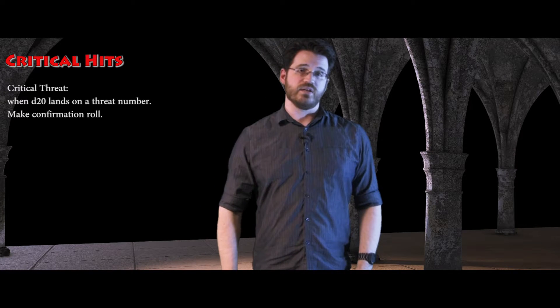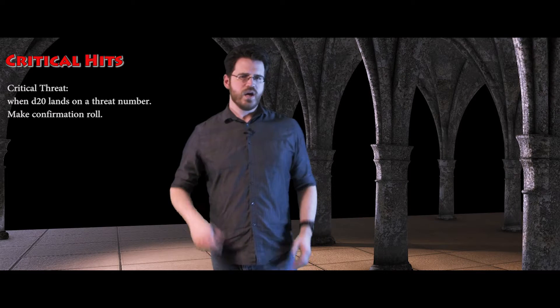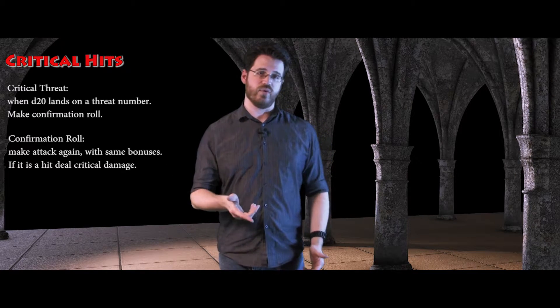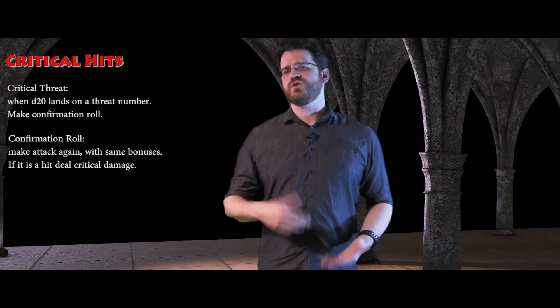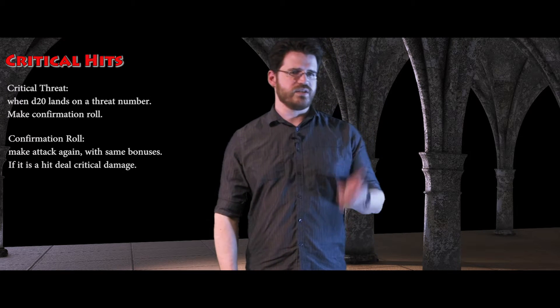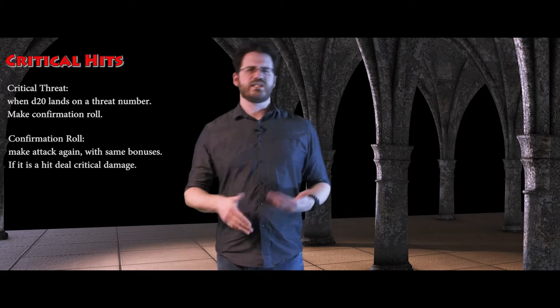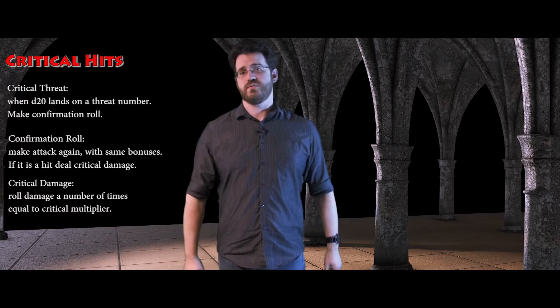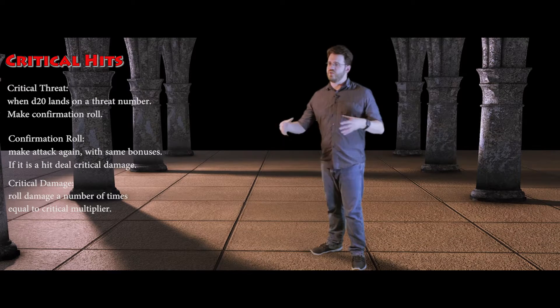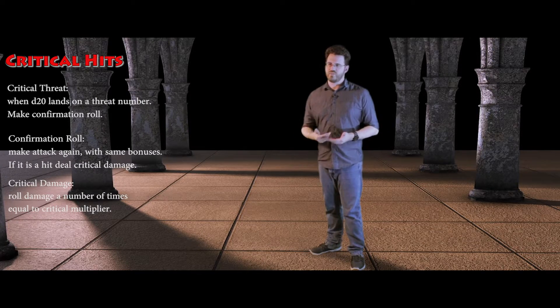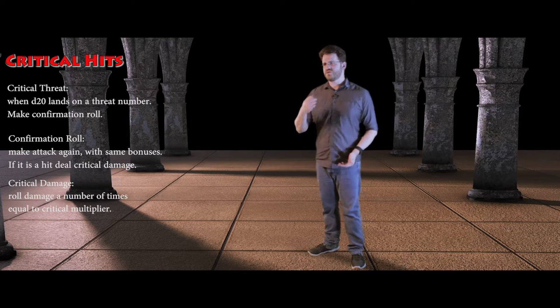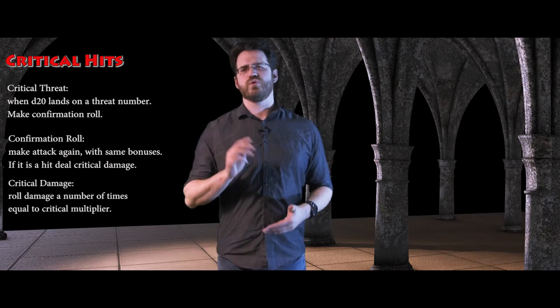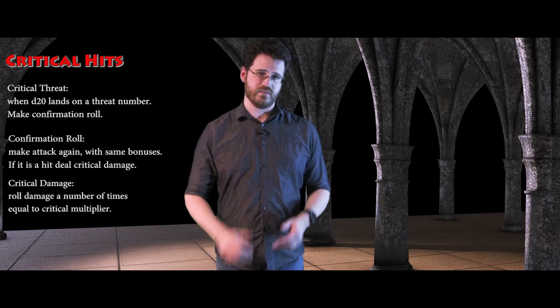Anytime you attack, you have a chance of scoring a critical hit. Your weapon entry will tell you the threat range — the number on the dice you need to roll to score a critical threat. If there's no threat range listed, you score a critical threat only on a natural 20. Once you score a threat, you immediately make a confirmation roll, which is another attack roll with all the same modifiers. If the confirmation roll also hits your target's AC, you've scored a critical hit. If you miss the confirmation roll, resolve the attack as a regular hit. A successful critical hit means you roll your damage as many times as the critical multiplier on your weapon; if there's no multiplier listed, it deals double damage. You add all your usual bonuses and add all damage together. The exception is that you do not multiply precision damage such as a rogue's sneak attack, or additional damage from special weapon qualities such as a flaming sword. If your attack scores a critical threat but does not hit your target, it is still a miss — except on a natural 20, which always hits regardless of armor class.